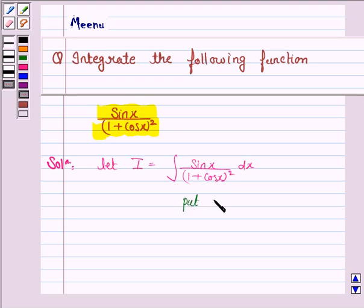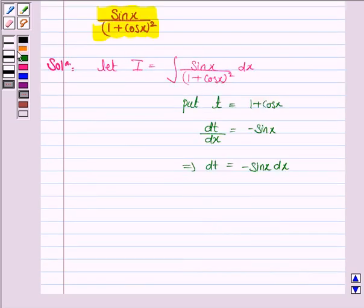So put t equal to 1 plus cos x. So dt by dx is equal to minus sin x. And this implies dt is equal to minus sin x dx. And this implies sin x dx is equal to minus dt.